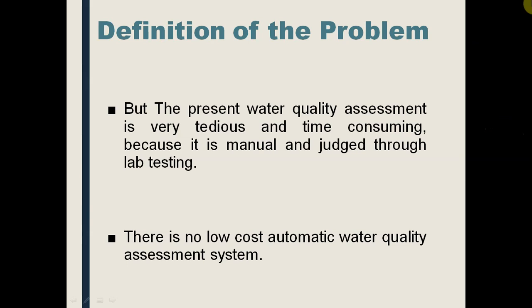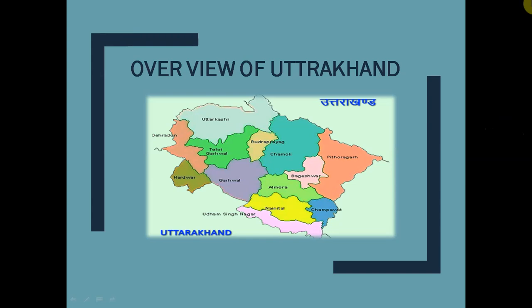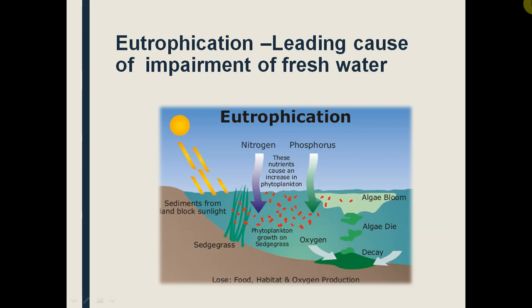Basically the system was planned for lakes, and we plan to establish water quality assessment devices in different areas if government and NGOs permit us. We have done trial runs and also identified the problem of eutrophication in lakes — algae consume oxygen, as shown in the diagram. Eutrophication is a leading cause of impairment of freshwater.